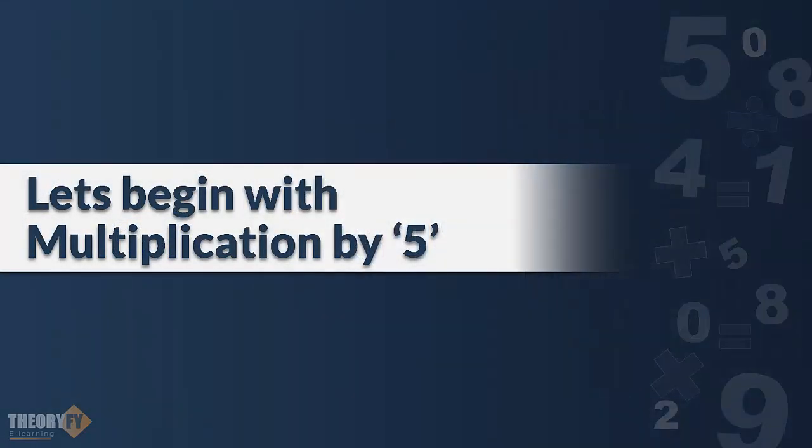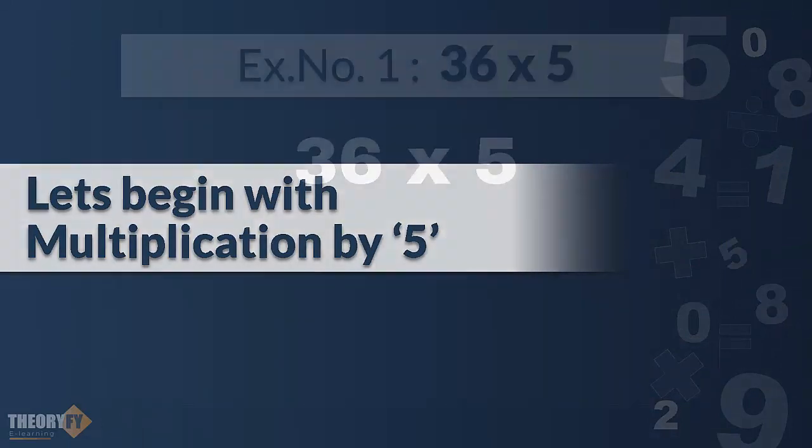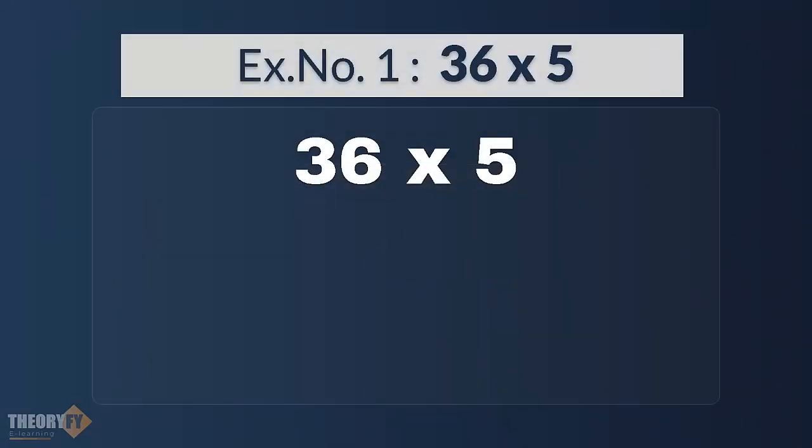Let's begin with multiplication by 5. Example number 1, 36 into 5. First of all, we need to understand that 5 is actually half of 10. So instead of multiplying any number with 5, what we can do, we can just half the multiplicand and then put one more 0 after it. It's simple. But to put it in a mathematical manner, let's try it here.